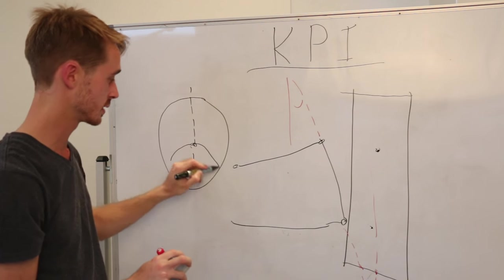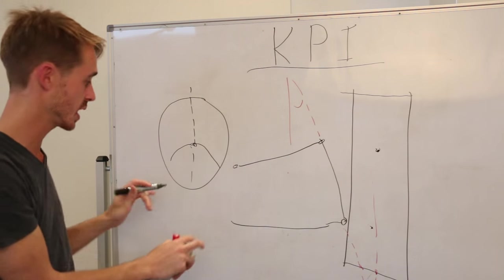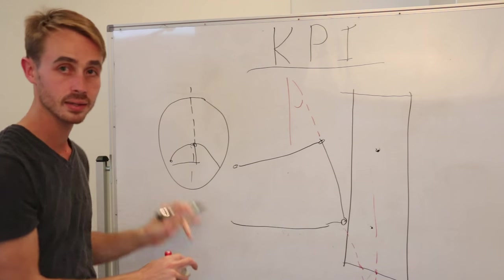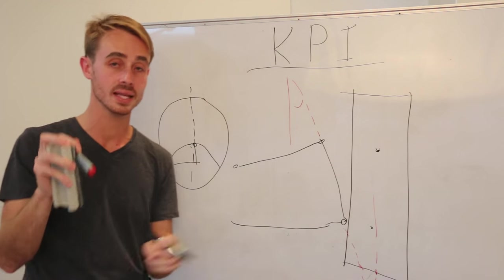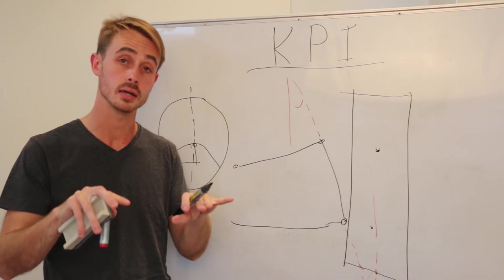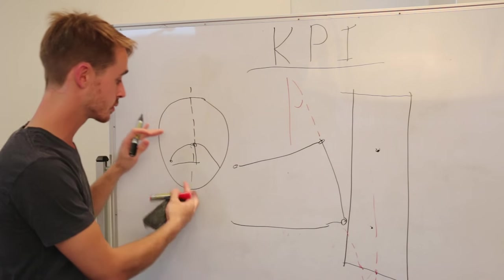It will move, exaggerated obviously, but it will move in that sort of shape. You can see that this point is below this point, right? Now that means that in order to turn that steering wheel, the driver is actually having to effectively lift up the car to a degree.